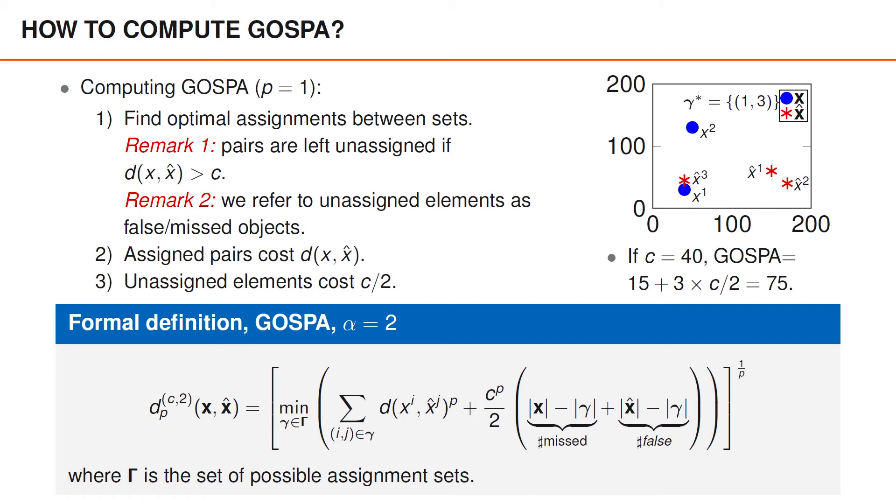For instance, in our example, the difference between the cardinalities of X and gamma is 2 minus 1, which is 1. Similarly, the difference between the cardinalities of Y and gamma is 3 minus 1, which is 2. Clearly, 1 and 2 are the number of missed and false objects in this example. To understand why the difference between the cardinalities of X and gamma is the number of missed objects, we note that gamma is the number of properly detected objects, and all objects that are not properly detected are missed. We present these equations in order to help you make sense of this metric. To actually implement the minimization over gamma, we express the metric on a slightly different form that enables us to use efficient assignment algorithms, such as the Hungarian or the auction algorithm.